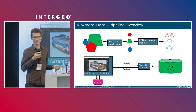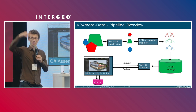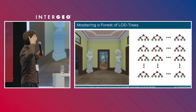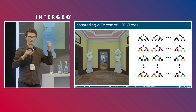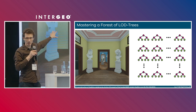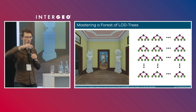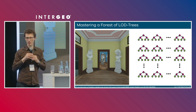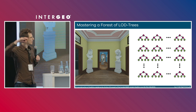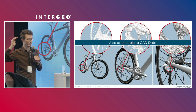One thing to keep in mind: if we have 290 objects all with their own level-of-detail trees, we also need to manage memory — which element gets how much memory, since it's limited. Of course, that can also be applied to point cloud data.